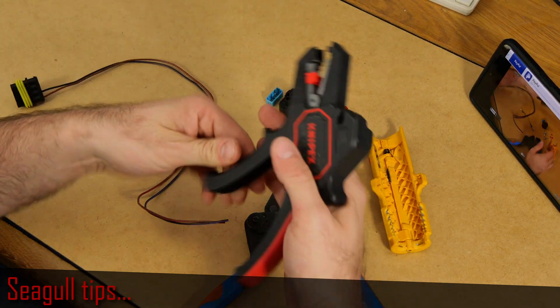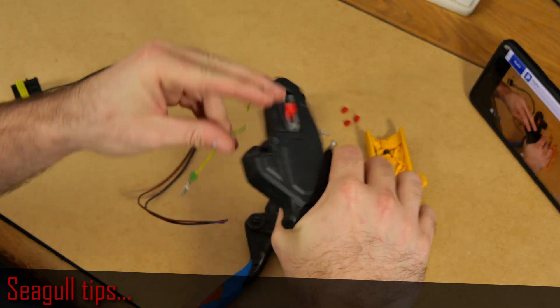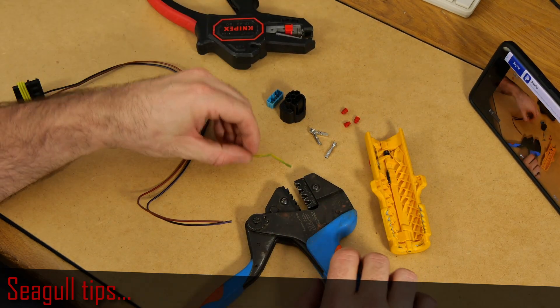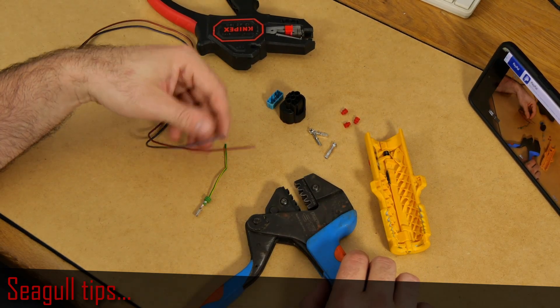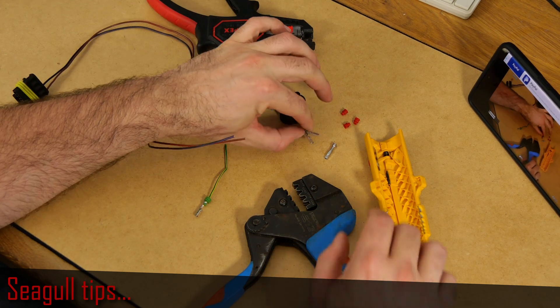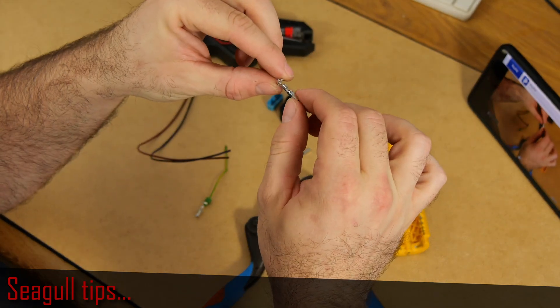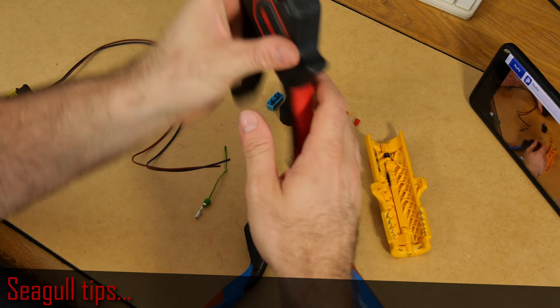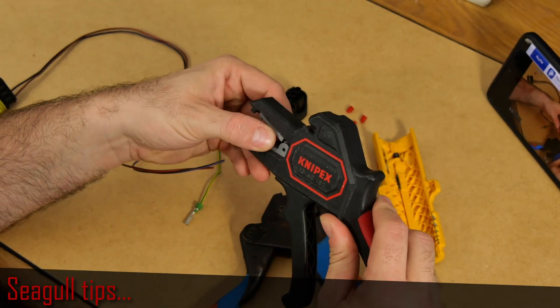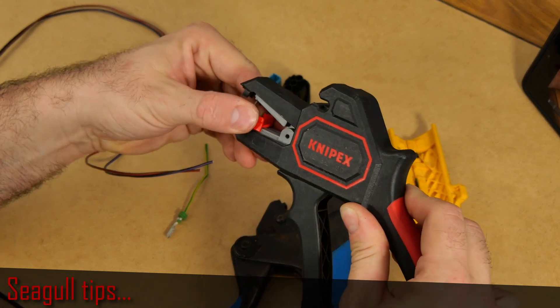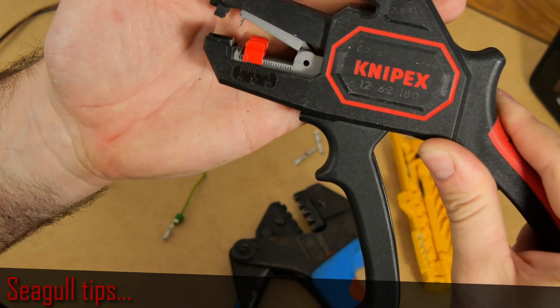Let me just remove this connector here so we have a clean cable. Now we want to remove insulation from the cables and I always try to do like six millimeters. You can set up this on this scale here on this tool to six millimeters.